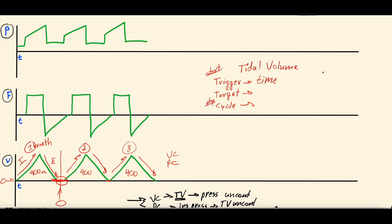The trigger is time because we set a respiratory rate. If we set the rate at 20, that means every 60 seconds the patient needs 20 breaths — about one breath every three seconds. This is assist control, meaning the patient can also take their own breaths, and those count toward the 20. But if the patient is not taking their own breaths, every three seconds the ventilator triggers itself to give a breath.